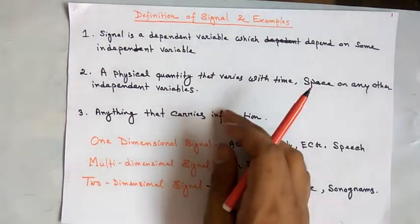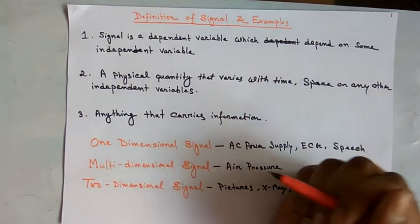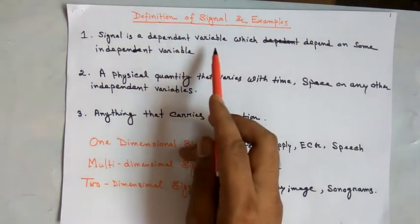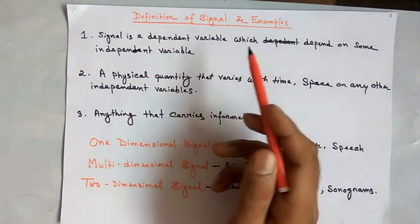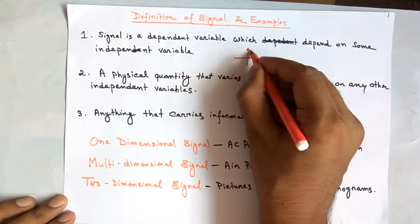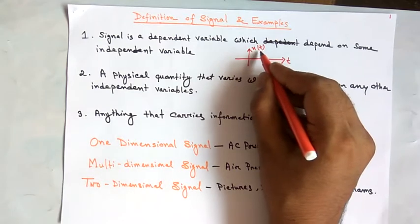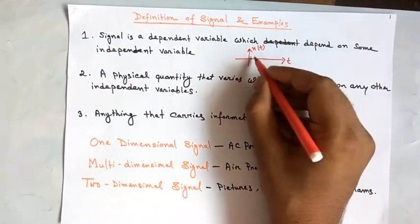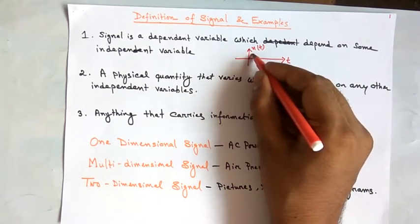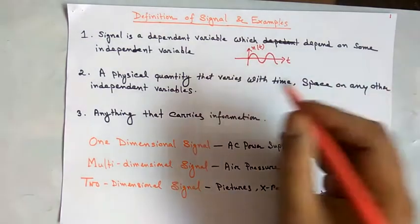First we will see the definition of a signal. A signal is a dependent variable which depends on some independent variable. For example, x(t) is a continuous time signal where x(t) is the dependent variable and t is the independent variable. So x(t) depends on t — the signal changes with respect to the independent variable, which is time.